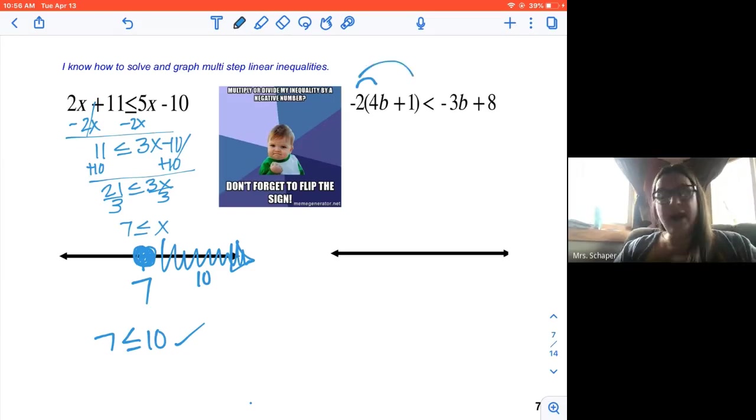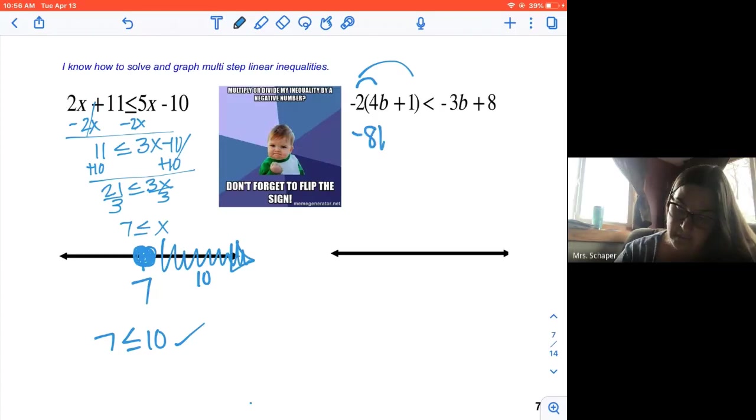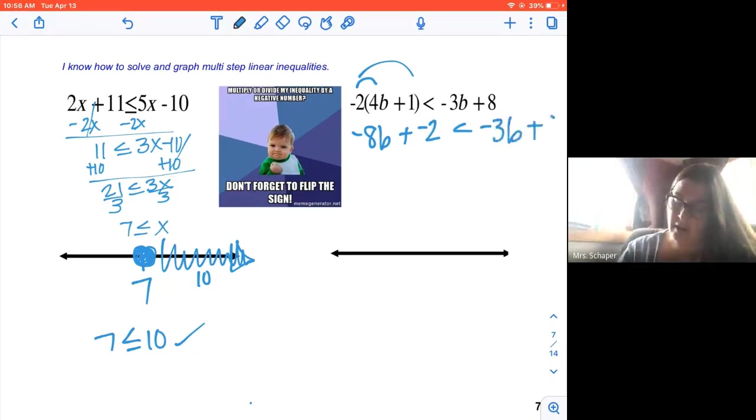And keep in mind when you're going through these videos, if you're like, you're going too fast, slow down. You can hit pause and pause it and wait for them to come to. So negative two times four B is negative eight B. Negative two times one is negative two.